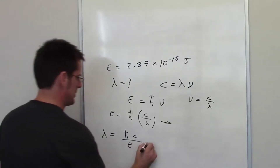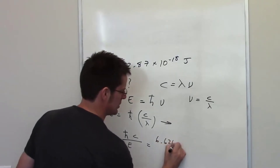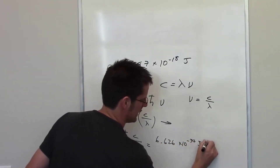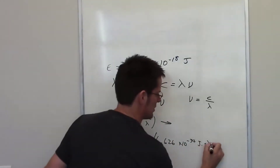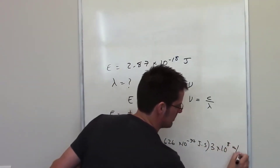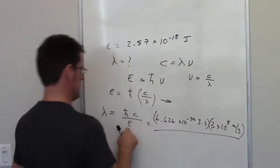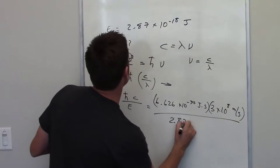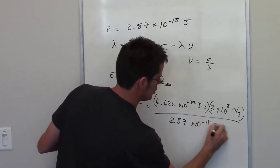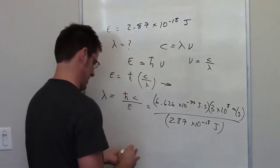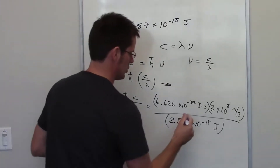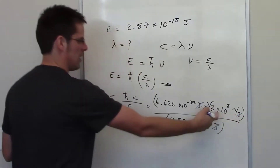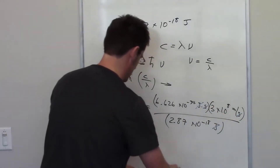So now it's just substitution. Planck's constant is 6.626 times 10 to the negative 34 joules times seconds. The speed of light is 3 times 10 to the 8th meters per second. The energy given for this problem is 2.87 times 10 to the negative 18 joules. The joules cancel out, and the seconds cancel each other out, leaving an answer in meters.